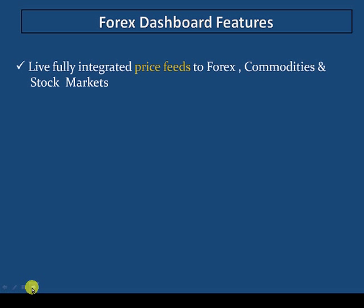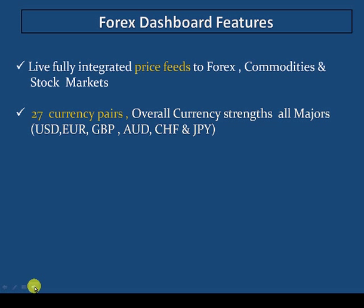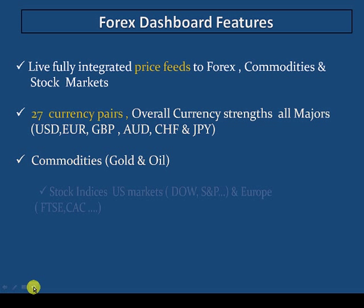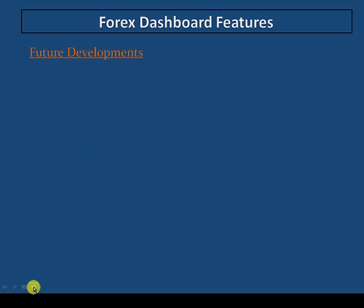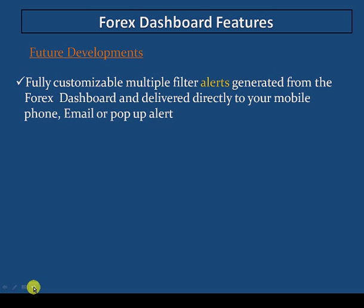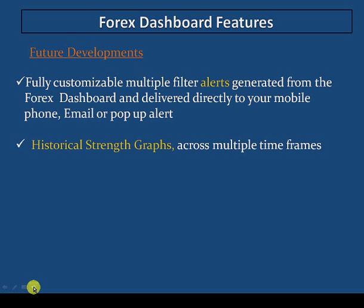Some features include a live, fully integrated price feed to forex, commodities, and stock markets. There are 27 different currency pairs to choose from and track. Overall currency strengths are represented and all the majors are included: US dollar, euro, GBP, Aussie, Swiss franc, and Japanese yen. Commodities are represented by gold and oil, and stock indices include both US and European markets — the Dow, S&P, FTSE, and CAC among others. Future developments planned include fully customizable multiple filter alerts delivered to your mobile phone, email, or pop-up, historical strength graphs across multiple time frames, and additional markets and indicators.